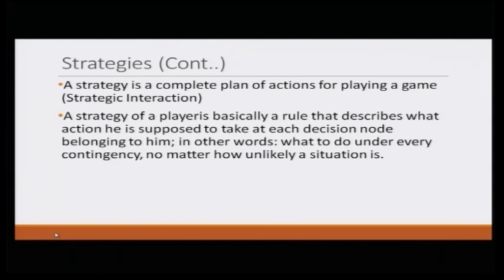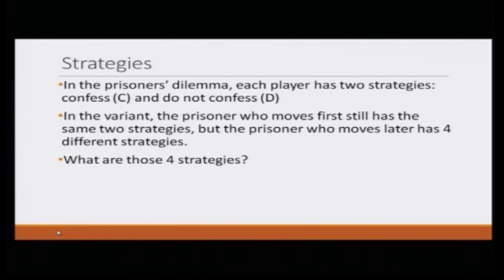So what do we see? A strategy is a complete plan of action for playing a game. In more detail, a strategy of a player is basically a rule that describes what action he is supposed to take at each decision node belonging to him — in other words, what to do under every contingency, no matter how unlikely that situation is. You can think of it this way: imagine you have to participate in a strategic interaction but you are busy, so you send your friend or representative. You give them a complete set of instructions on how to behave as if it were you — and that is what a strategy is.